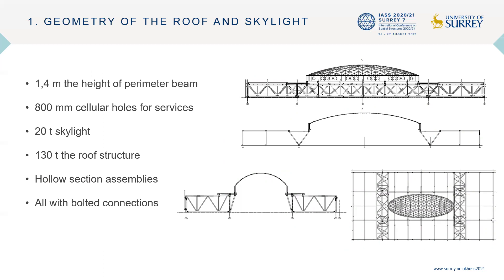This was according to the diameter of the ventilation tubes, which was necessary to have around 800 millimeters. The structural weights are around 20 tons for the skylight and 130 tons for the roof structure. All the structure was designed with hollow sections and the assemblies were realized with bolted connections.